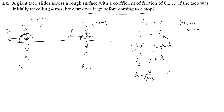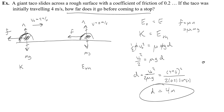If I do that, the mass cancels out. I'll rewrite this as v squared over 2 equals mu g d, and if I want to find d, I just need to divide both sides by mu times g, which gives d equals v naught squared over 2 mu g. Plugging in the numbers: 4 meters per second squared, over 2 times mu of 0.2, times g of 10 meters per second squared. This gives a distance of 4 meters.